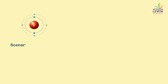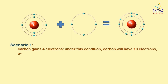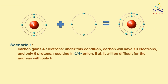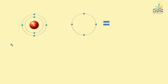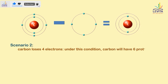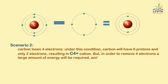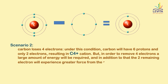Scenario 1: Carbon gains 4 electrons. Under this condition, carbon will have 10 electrons and only 6 protons, resulting in a C⁴⁻ anion. But it will be difficult for the nucleus with only 6 protons to hold on to 10 electrons, and thus this leads to an unstable configuration. Scenario 2: Carbon loses 4 electrons. Under this condition, carbon will have 6 protons and only 2 electrons, resulting in a C⁴⁺ cation. But in order to remove 4 electrons, a large amount of energy will be required, and the two remaining electrons will experience a greater force from the nucleus, thus destabilizing the atom.